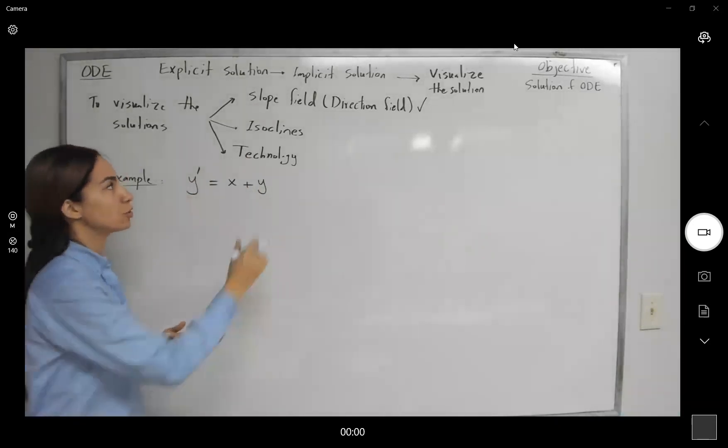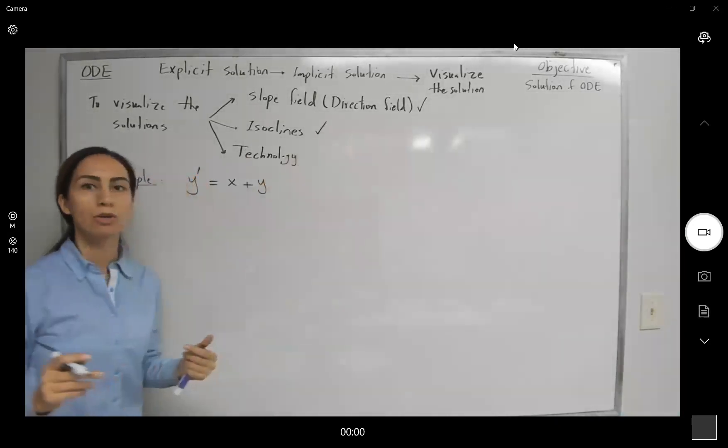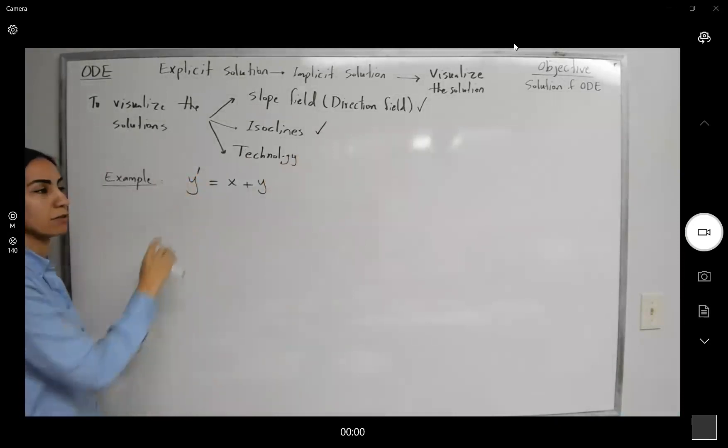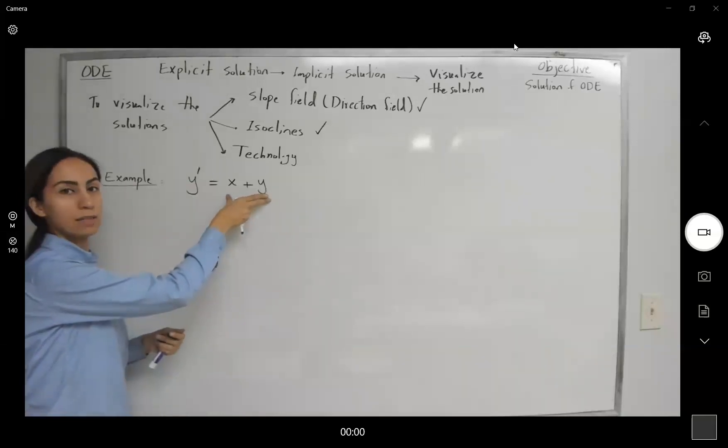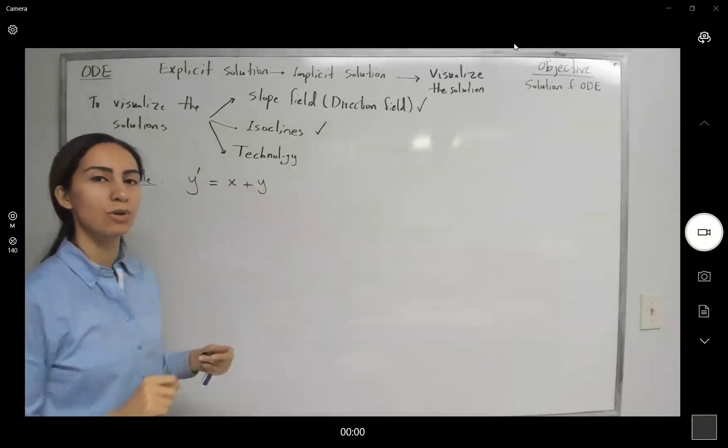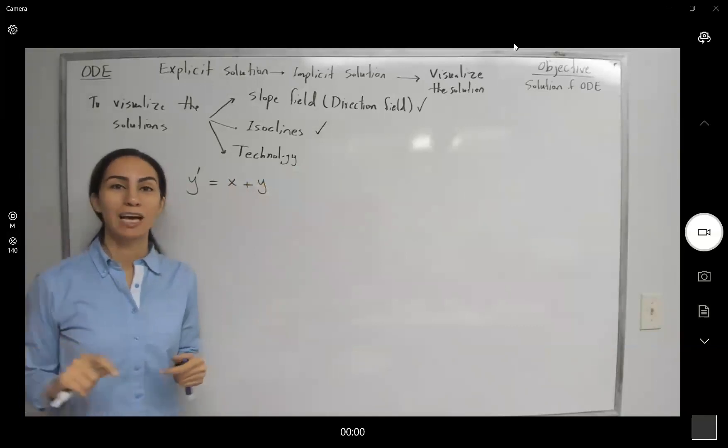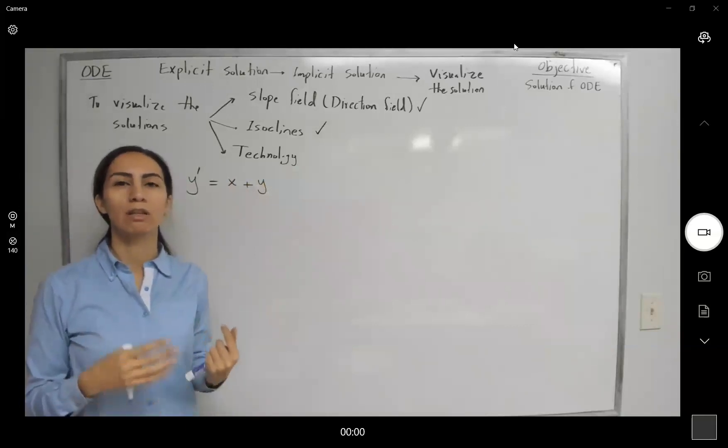What we're going to do to use this method, we're going to set the derivative equal to different constants. And then it means that you are taking the function of x and y and set it equals to constant. If you go back to calculus, it means that you're trying to graph the level curves.